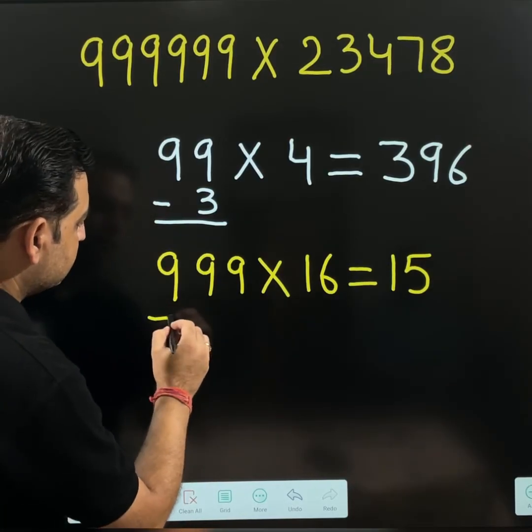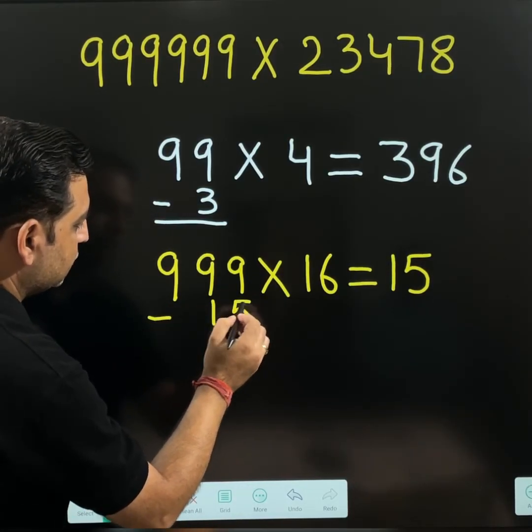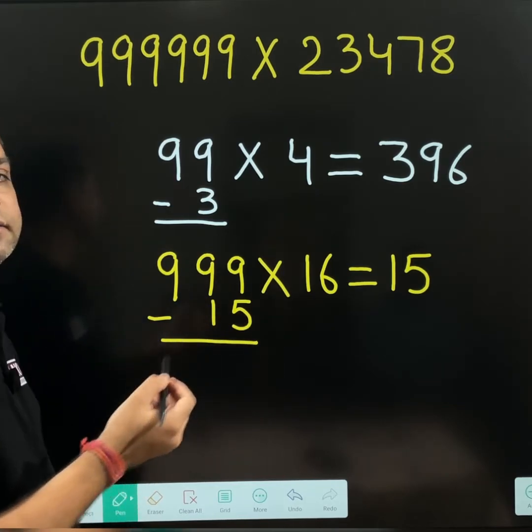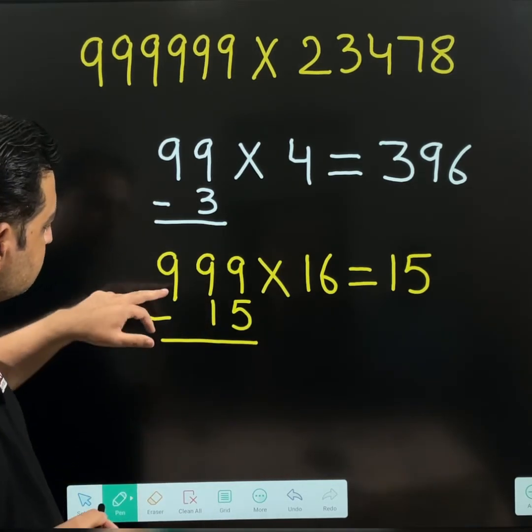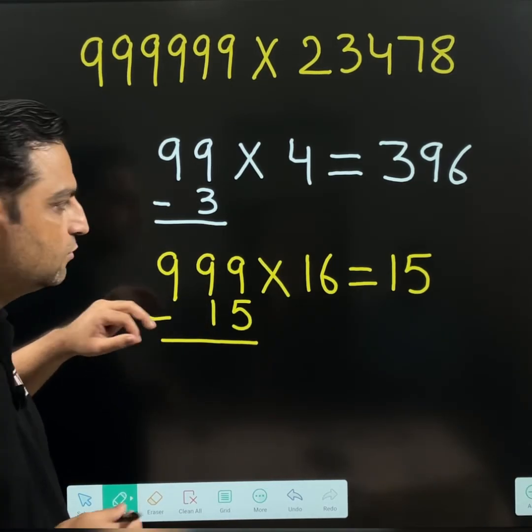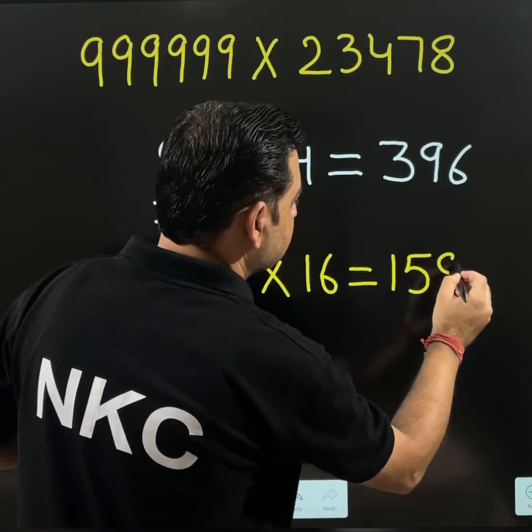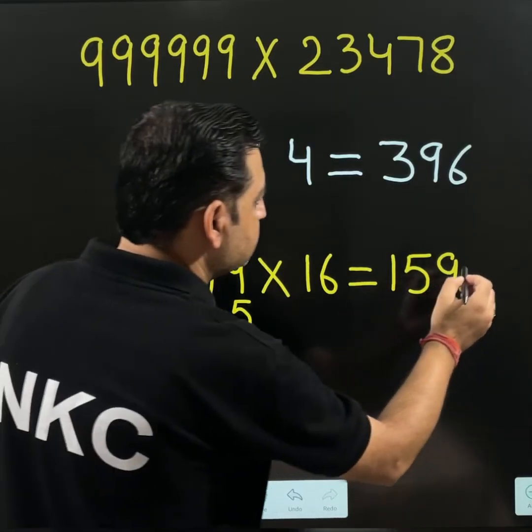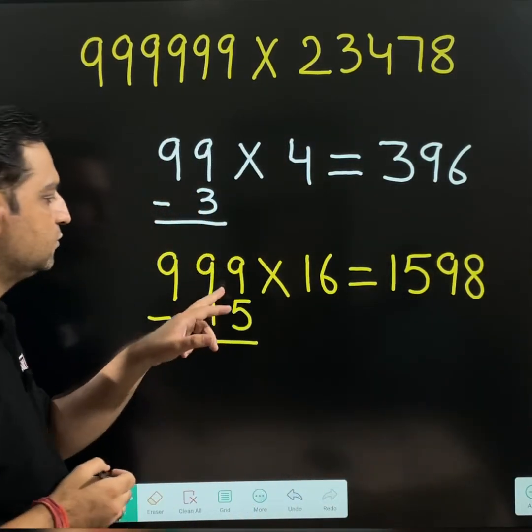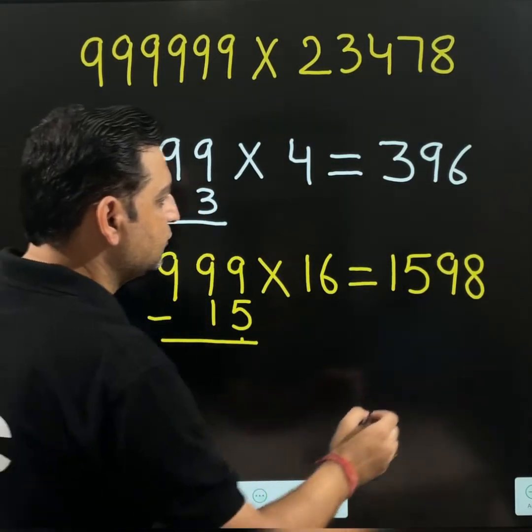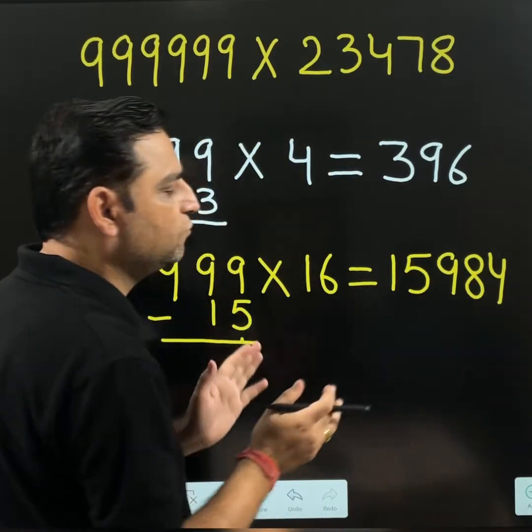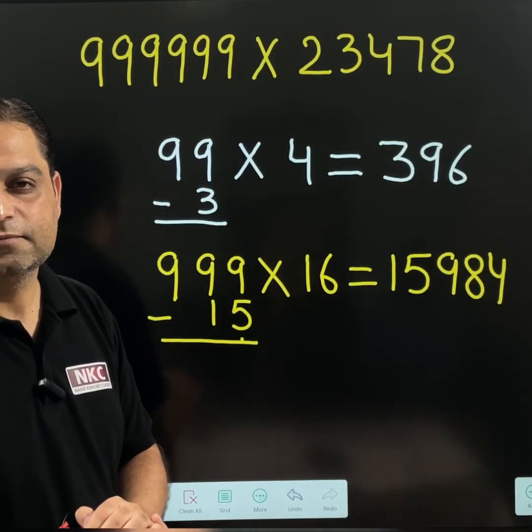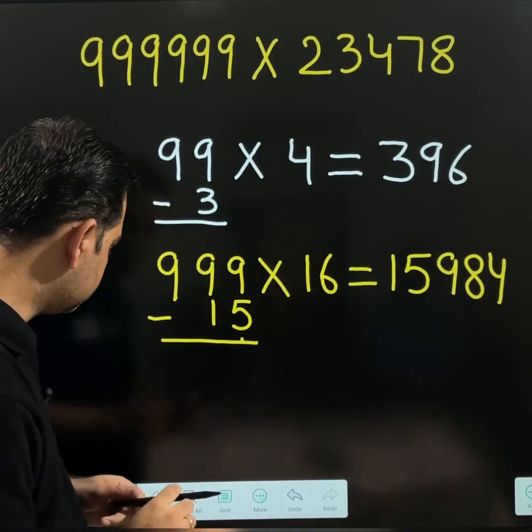Then subtract this 15 from 999. Subtraction is easy. See, there is nothing below this 9. This 9 is going to remain as it is. 9 minus 1, it is 8 and 9 minus 5, this is going to be 4. So 15984 is the answer. I hope you are clear with the concept.